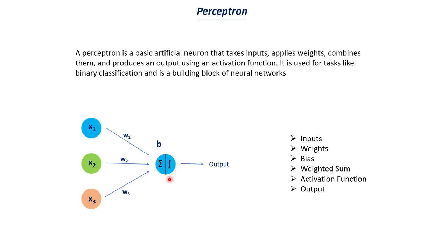Once we have this sum, it is fed to an activation function. The activation function performs a certain operation and outputs a certain value — that is the output. To recap: input features are multiplied by their weights, a summation happens, that summed value is then applied to an activation function, and you finally get an output. The factors are: inputs, weights, bias, weighted sum, activation function, and output.